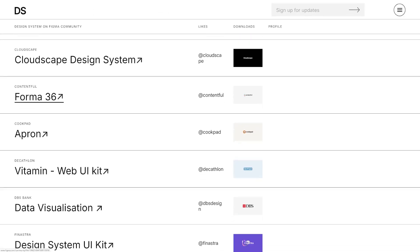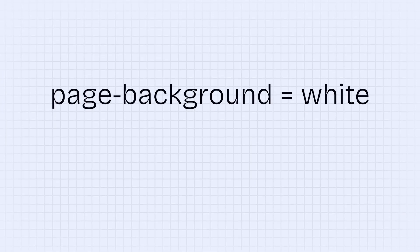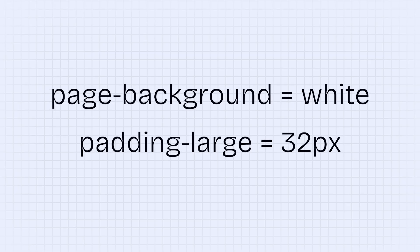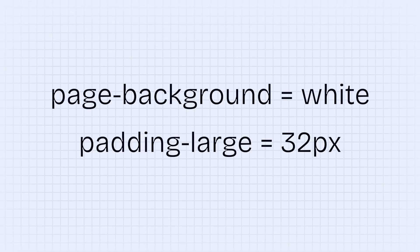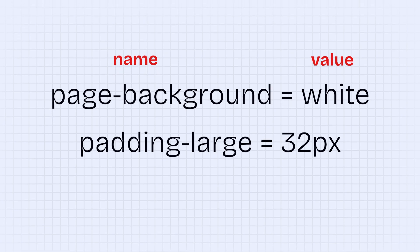If you want to see how the best web designers in the world build their design systems, Figma put together a great resource called designsystems.com, with a collection of design systems built by companies like Microsoft, Google, Uber, and more. The foundation of a design system is built using something called a token. A token is a single rule about your design. For example, you might have a token named Page Background which defines the background color of your pages, or a token named Padding Large which sets the padding to 32 pixels. All tokens have both a name and a value — that value can be a number, a color, or even another token.